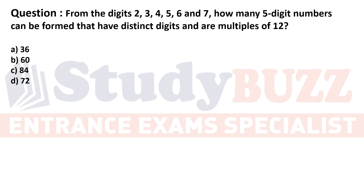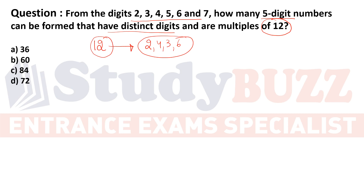From the digits 2, 3, 4, 5, 6, 7: how many 5-digit numbers with distinct digits are multiples of 12? For a number to be a multiple of 12, it must be a multiple of both 4 and 3, because 12 = 4 × 3. We need to ensure both conditions: divisibility by 4 and divisibility by 3.